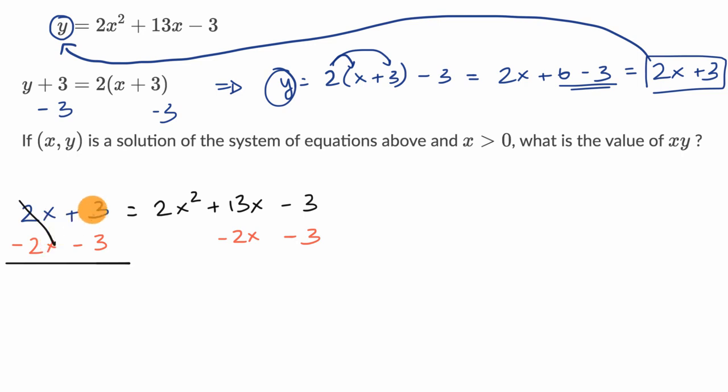And then what that leaves me with on the left-hand side, by design, it leaves me with zero. And on the right-hand side, I have two x squared. Now 13 x minus two x is going to be 11 x, so plus 11 x, and then we have two negative threes, so that is negative six.